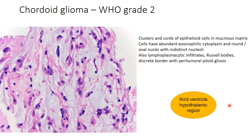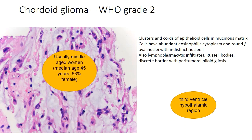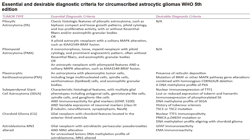Cordoid glioma typically occurs in the third ventricle and hypothalamic region, usually in middle-aged women with a median age of 45 years; 63% of cases have been reported in the female population.